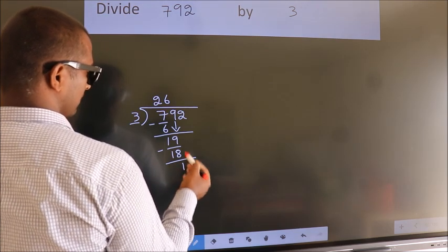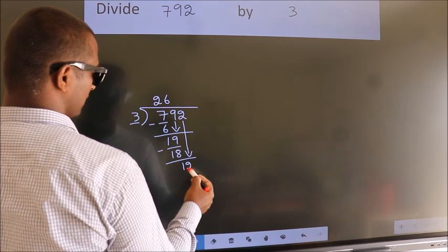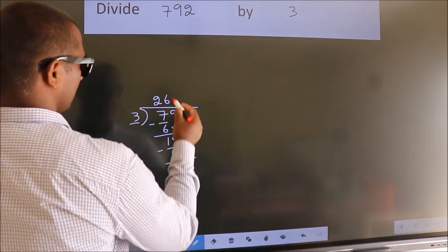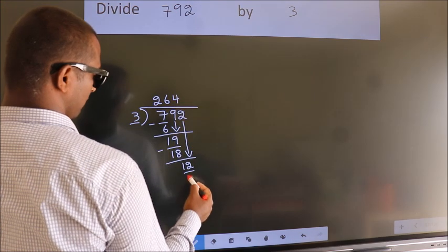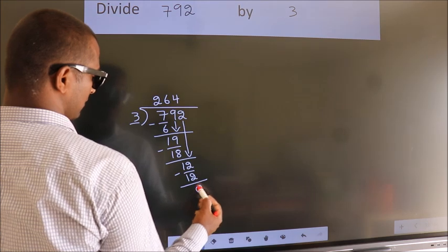After this, bring down the beside number, so 2 down, so 12. When do we get 12? In 3 table, 3 times 4 is 12. Now we subtract, we get 0.